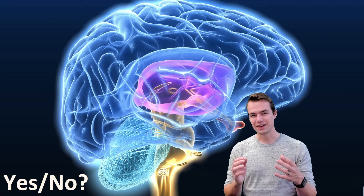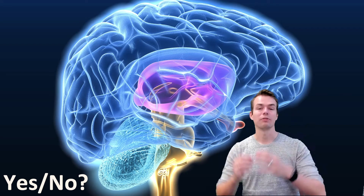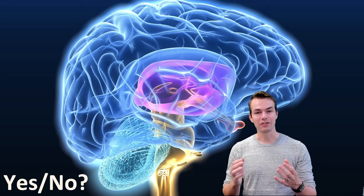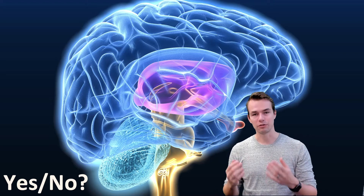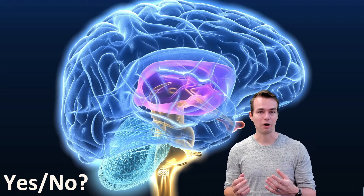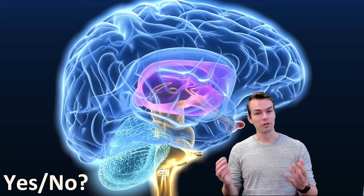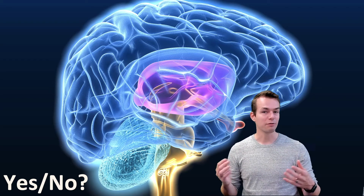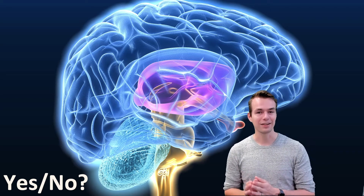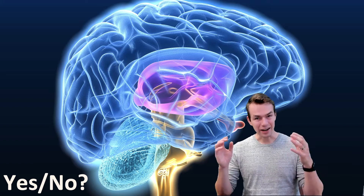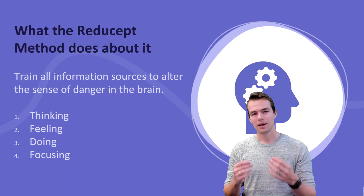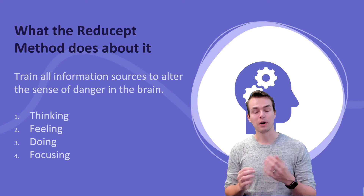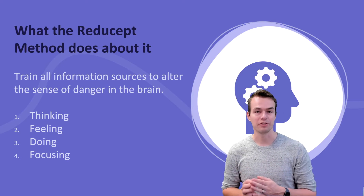So what we see is that there is a pain alarm center in the brain that's actually deciding to create pain or not. It's a yes or no situation where not only information from the body is involved, but all this other information about what we think, feel, do, and where our attention is directed at is actually influencing this alarm center in the brain as well. And that is specifically where we designed the Regiscept method for.